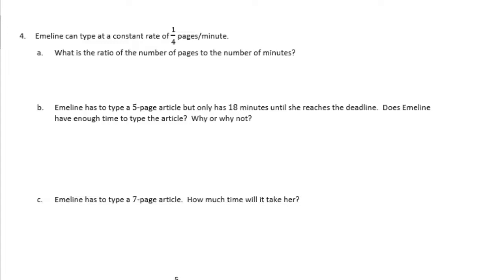Number 4. Emmeline can type at a constant rate of 1 fourth pages per minute. What is the ratio of the number of pages to the number of minutes? So pages to minutes would be 1 to 4. Emmeline has a 5 page article but only has 18 minutes until she reaches the deadline. Does Emmeline have enough time to type the article? Why or why not?